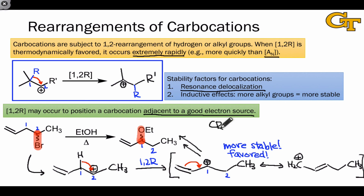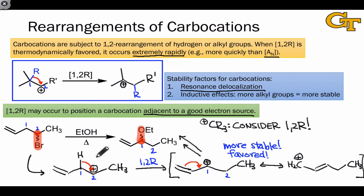The overarching lesson of this video is that any time you encounter a carbocation within a reaction mechanism, it's important to consider rearrangements — more specifically, the 1,2R step. Make sure to evaluate whether any potential 1,2Rs within the cationic intermediate could lead to considerably more stable intermediates, bearing more alkyl groups at the positively charged carbon or possessing additional resonance structures. As you practice with mechanisms involving carbocations more and more, you'll start to recognize structural patterns that point to the importance of 1,2R within a particular context.